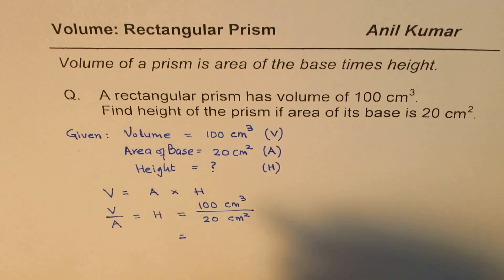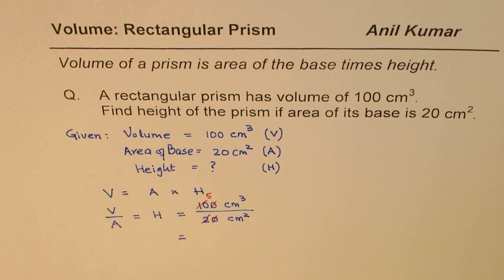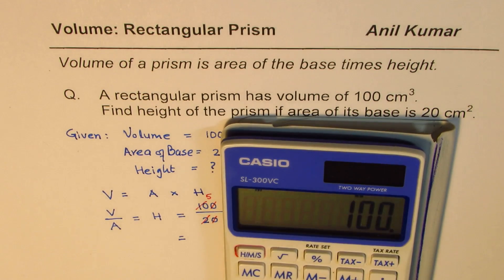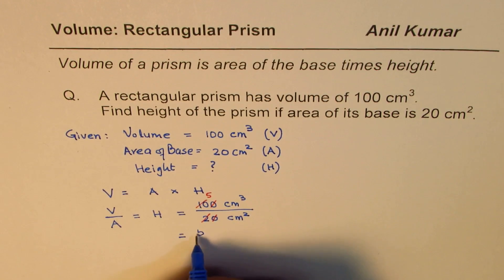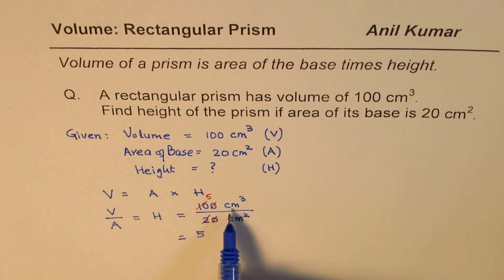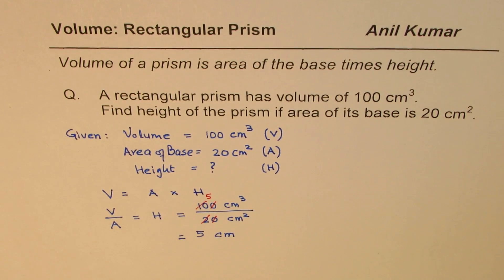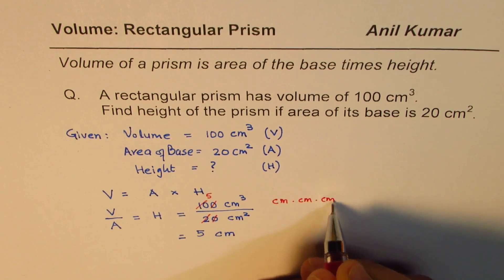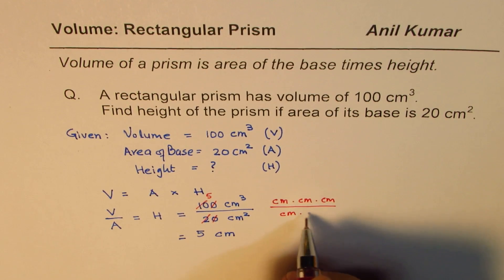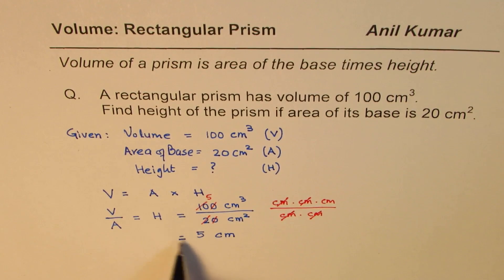Now let's divide: 100 divided by 20 equals 5. So the answer is 5. Now for the units: we have cm cubed divided by cm squared. Centimeter cubed means cm × cm × cm, and we are dividing by cm squared which is cm × cm. Two of the centimeters cancel, and we are left with just one centimeter. So the unit for height is centimeters, giving us 5 centimeters.